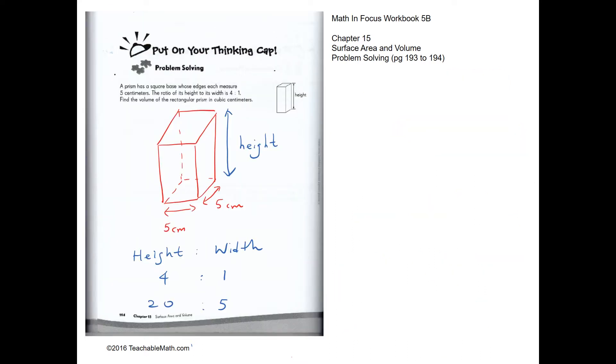Problem solving: A prism has a square base whose edges each measure 5 cm. The ratio of its height to its width is 4 to 1. Find the volume of the prism. We have a square base and the sides are 5 cm by 5 cm. The ratio between the height and the width is 4 to 1. So if the width is 5 cm, the height will be 20 cm.